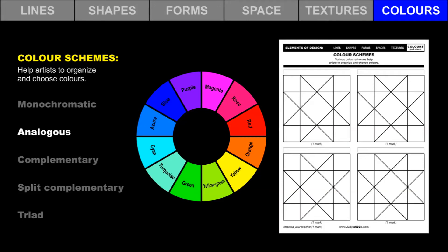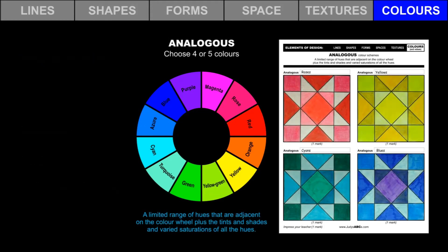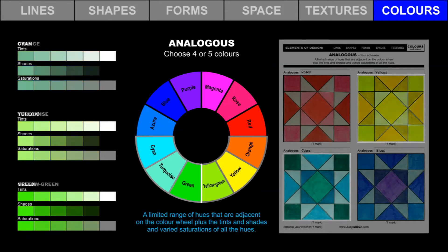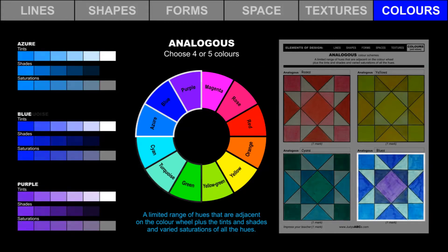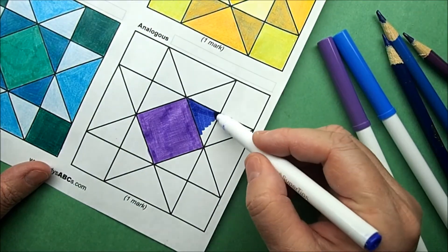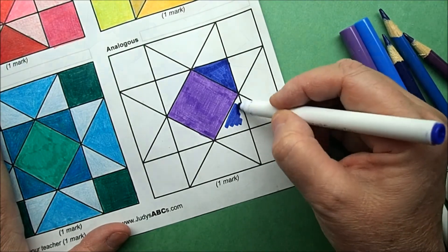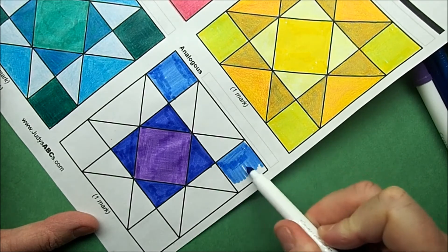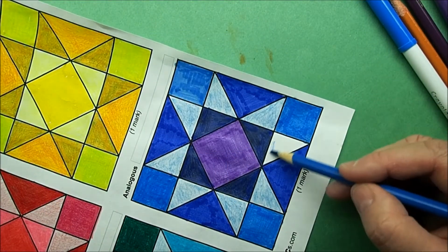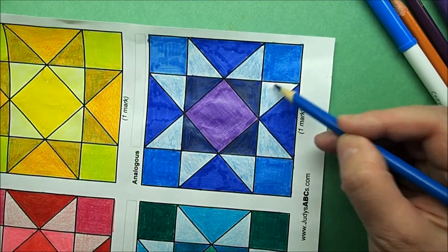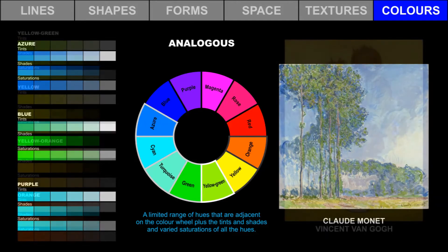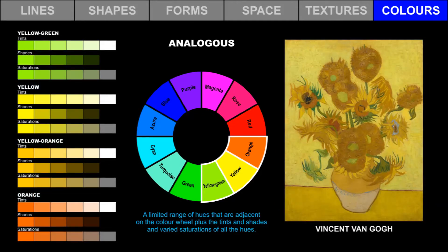Let's try analogous color schemes. An analogous color scheme includes a limited range of hues that are adjacent on the color wheel, plus the tints and shades and varied saturations of each of the selected hues. Choose four or five colors from this range. Use pencil crayons and markers to create four different analogous color schemes. Claude Monet is a famous artist who used an analogous color scheme in his paintings, including his painting of sunflowers.